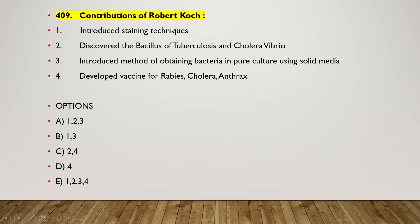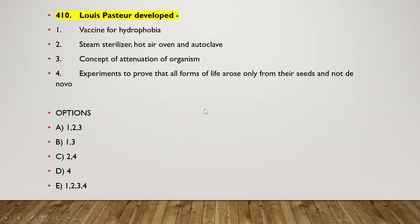Next question: contributions of Robert Koch include — (1) introduced staining technique, (2) discovered the bacillus of tuberculosis and Vibrio cholerae, (3) introduced method of obtaining bacteria in pure culture using solid media, (4) developed vaccine for rabies, cholera, and anthrax. The answer is option A — one, two, and three is the correct answer.